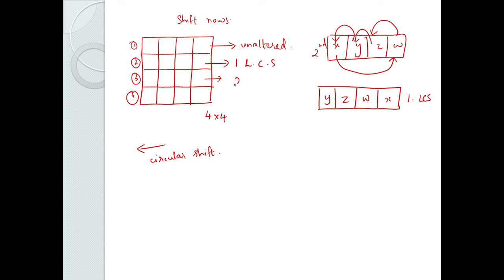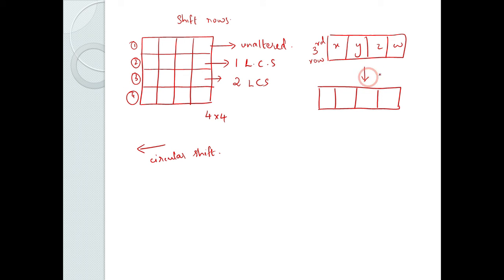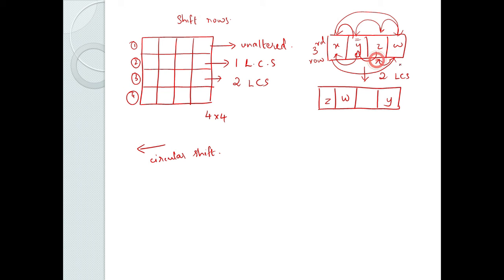The third row undergoes a 2-byte left circular shift. So if the values are X, Y, Z, W, after a 2-byte left circular shift the result is Z, W, X, Y. The fourth row undergoes a 3-byte left circular shift.